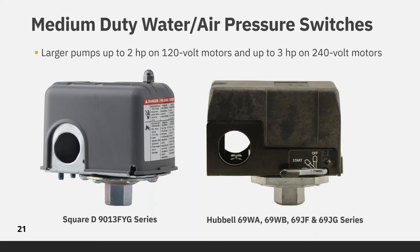Medium duty pressure switches are best used with larger pumps up to 2 horsepower on 120 volt motors and up to 3 horsepower on 240 volt motors. Hubble's 69J series is the most adaptable switch on the market. It offers the user the flexibility to build the pressure switch around the compressor and not the other way around. The unloader can be mounted on either side and can be rotated to any of eight different positions, allowing for quicker assembly and shorter tubing.